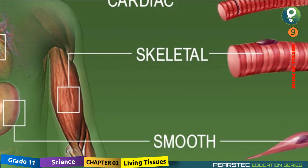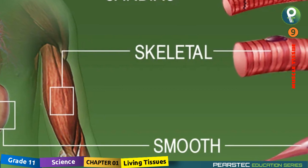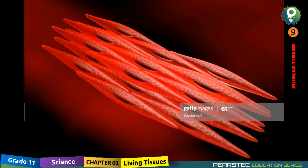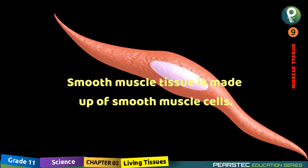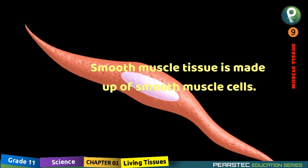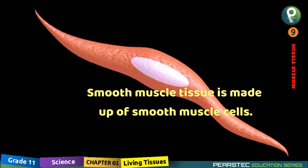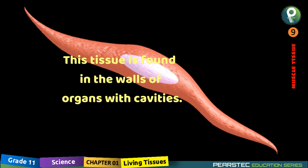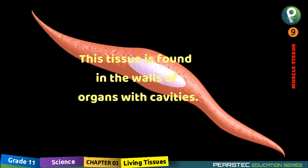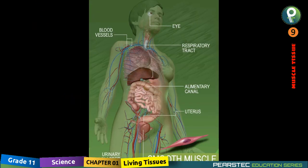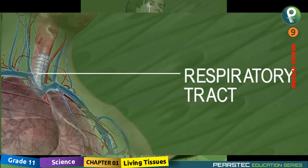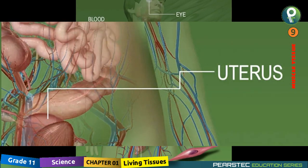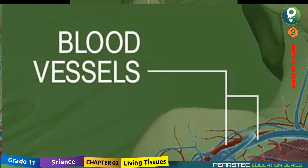Now it's time for us to understand the first one — smooth muscle tissue. Smooth muscle tissue is made up of smooth muscle cells. This tissue is found in the walls of organs with cavities, for example, walls of the digestive tract, uterus, blood vessels, and bladder.